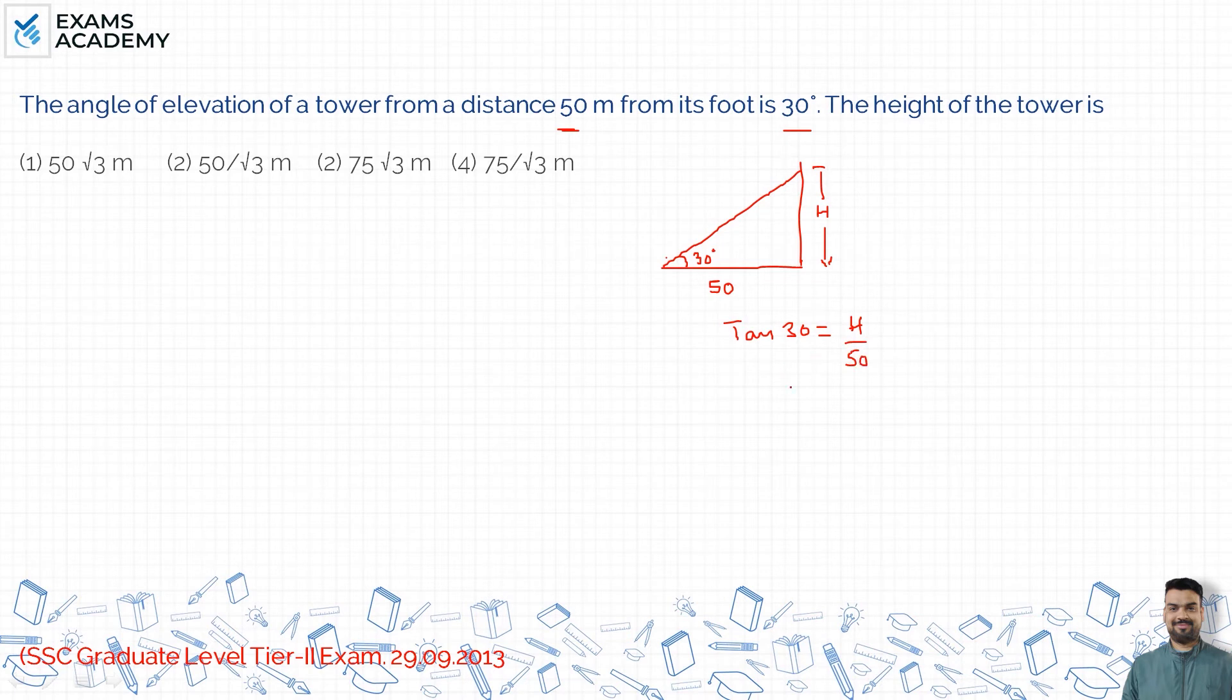tan 30 degrees is 1 by root 3, equals h upon 50. So h equals 50 upon root 3.